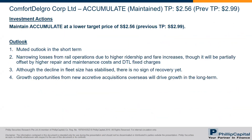We maintain accumulate at a lower target price of $2.56, due to the muted outlook in the short term. There are narrowing cost losses from rail operations, but these will be offset by the TCL fees charged and higher maintenance costs. Growth opportunities are likely to come from inorganic growth through equity acquisitions overseas.